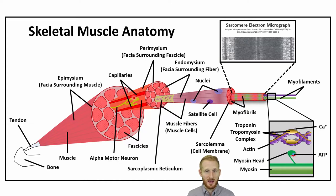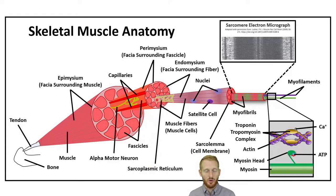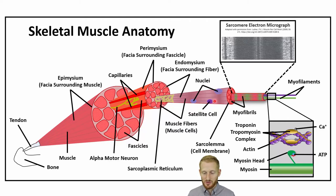Within the epimysium, we have muscle fascicles, which are just bundles of muscle cells or muscle fibers — fibers and muscle cells are the same thing. These fascicles are surrounded by the perimysium, another inner layer of the fascia. You can also see that the alpha motor neuron is going to be at this level of the anatomy, along with the capillaries that supply the blood. The next unit down is the individual muscle cell, surrounded by the endomysium, which is the fascia that surrounds the actual muscle cells themselves.